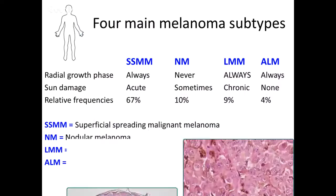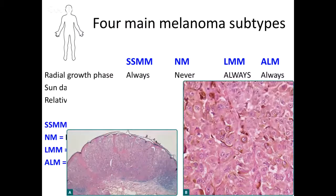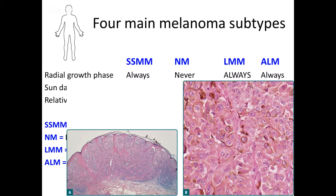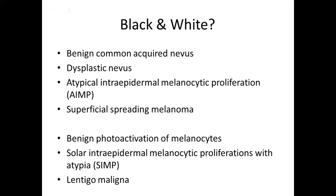Lastly, nodular melanomas can occur anywhere. They don't necessarily have a strong association with sun exposure — they can occur in chronically or intermittently sun-damaged sites. The key thing about nodular melanomas is that they basically skip the radial growth phase — they're almost de novo invasive vertical growth phase melanomas. So they tend to grow pretty quickly, and these are the melanomas that patients often present with at advanced pathological T stage in terms of Breslow thickness.